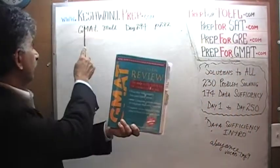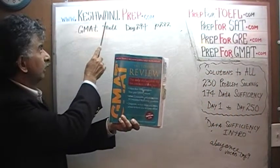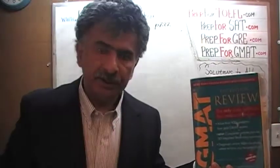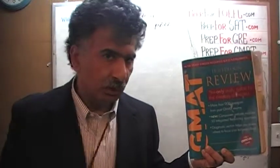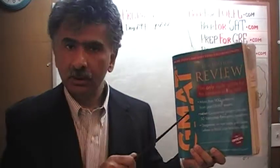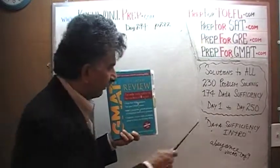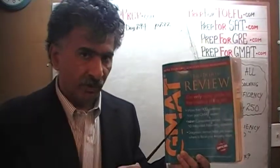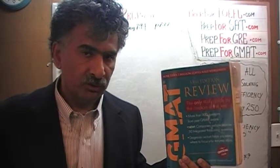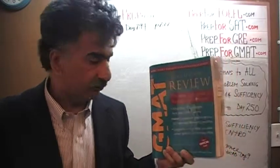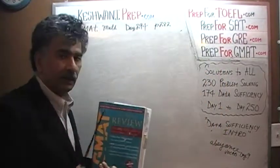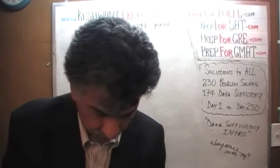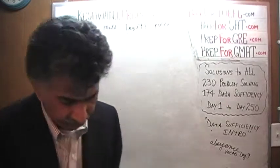Hello, my name is Keshwani — K-E-S-H-W-A-N-I. We are here because we want to prepare for the GMAT. We have been solving GMAT math problems out of this book, GMAT Review, the official guide, the 13th edition. If you do not own this book already, purchase one immediately. The book contains 230 problem solving questions and 174 data sufficiency questions. We have already solved every single math problem from this book. Right now we are redoing the problems and we are on page number 282. The problem we are about to solve is number 85.